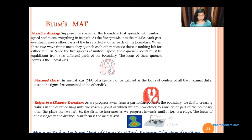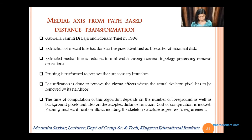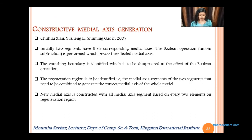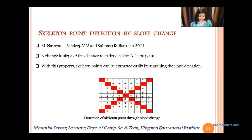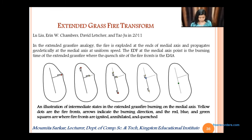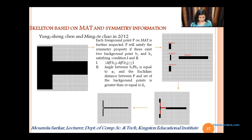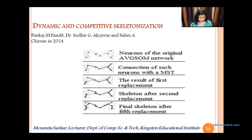Now for the non-iterative approaches. We have the grassland analogy, maximal disk which is the MAT explained earlier, regions and distance transformation, medial axis from path-based distance transformation, constructive medial axis generation, medial axis based fitting for character sets, selection point, skeleton point detection by slope change, extended brass wire transform, skeleton based on matter as well as symmetry formation, and dynamic and competitive skeletons.